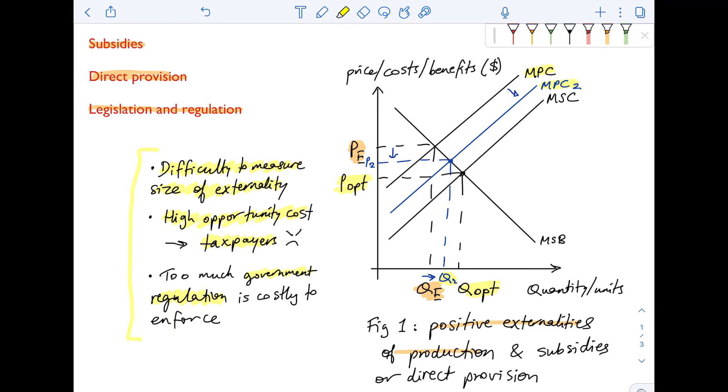So remember, in the case of positive externalities of production, these forms of government intervention, since the initial market failure is there's a problem of underproduction, the solution is for the government to use strategies that would encourage production like subsidies, direct provision.